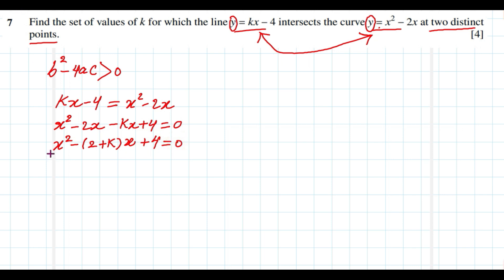Now you see it's possible to get the a coefficient, b coefficient, and c coefficient. And we can put them back into the discriminant inequality, which is above zero. Now we can say b squared, that means negative 2 minus k, which is b squared, then minus 4 times ac.